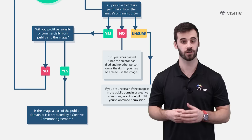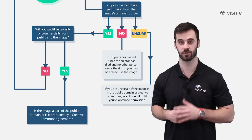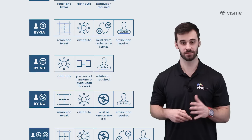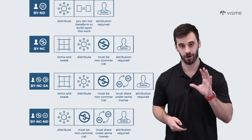The next question is: is it a part of the public domain, or is it part of what is called a Creative Commons Agreement? A Creative Commons license is one of several public copyright licenses that enables the free distribution of an otherwise copyrighted work. There are six types of Creative Commons licenses, all slightly different from one another. Sometimes the image can be modified; sometimes the image can only be used commercially.